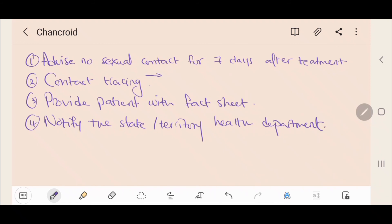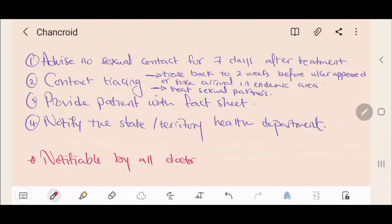Remember that chancroid should be contact traced back to 2 weeks before ulcers appeared or since arrival in an endemic area and always treat sexual partners. Chancroid is notifiable by all doctors and by laboratory on positive isolation.